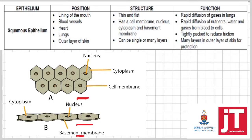The lining of your mouth — your cheek cells — is made up of squamous epithelium. Your blood vessels are lined with squamous epithelium, and your heart also has a lining of squamous epithelium. The lungs are made up of air sacs called alveoli, which are lined with a single layer of squamous epithelium, as well as the outer layer of your skin.